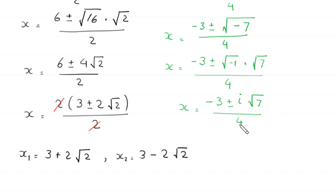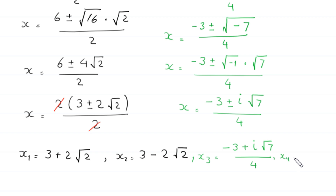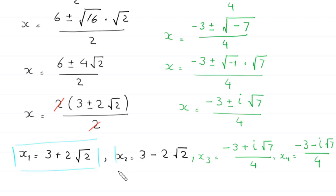From here we get the other two values of x: x₃ equals (negative 3 plus i√7) divided by 4, and x₄ equals (negative 3 minus i√7) divided by 4. So these are the four solutions of this equation: 3 plus 2√2, 3 minus 2√2, (−3 + i√7)/4, and (−3 − i√7)/4. Thank you.